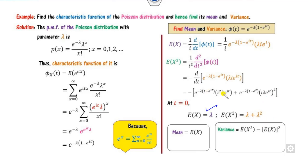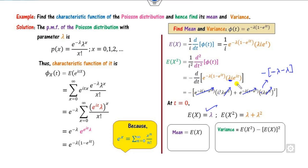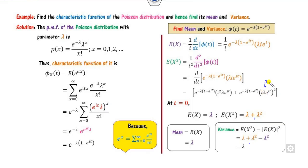For E[X^2], we take (1/iota^2) times the second derivative at t=0, using the product rule on phi'(t). Since iota^2 = -1, substituting t=0 and simplifying gives E[X^2] = lambda^2 + lambda. Therefore, variance = E[X^2] - (E[X])^2 = lambda^2 + lambda - lambda^2 = lambda. So for the Poisson distribution, mean = variance = lambda.